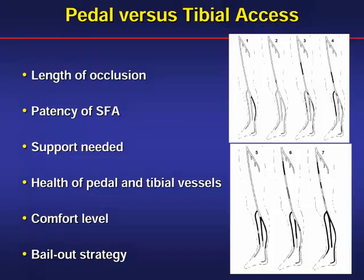The same principles for popliteal access and even antegrade or retrograde common femoral access apply. You need to have a landing zone so you can advance the wire and then advance your support catheter or sheath over that wire. If you go too close to the lesion, you won't be able to advance your sheath or support catheter, because the floppy part of the wire is in the artery and you won't have enough support.